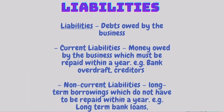Liabilities are debts owed by the business. Current liabilities are money owed by the business which must be repaid within a year — for example, a bank overdraft or creditors. Non-current liabilities are long-term borrowings which do not have to be repaid within a year; they can be repaid even after a year. An example is a long-term bank loan.